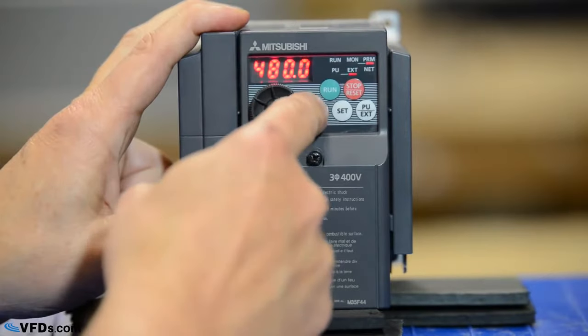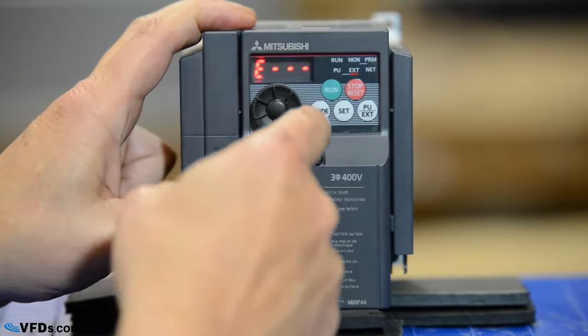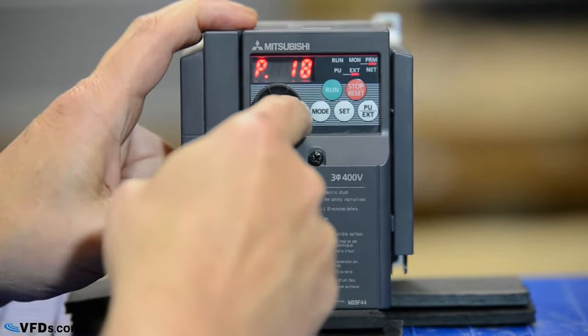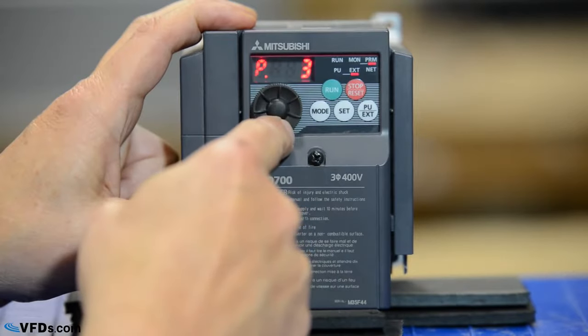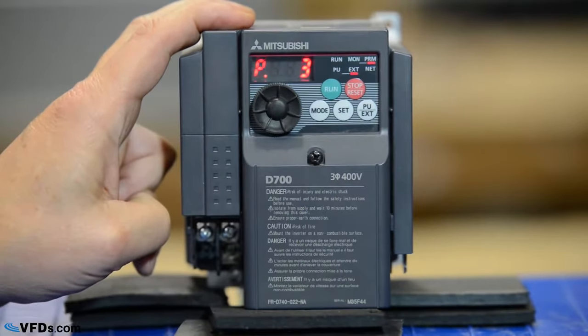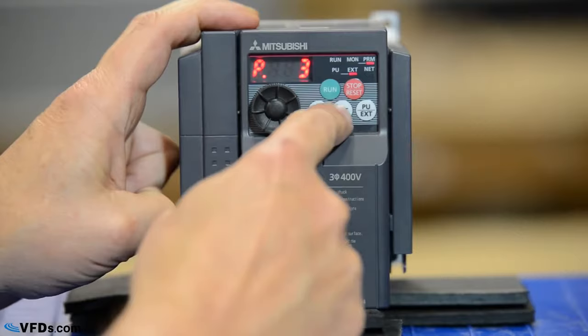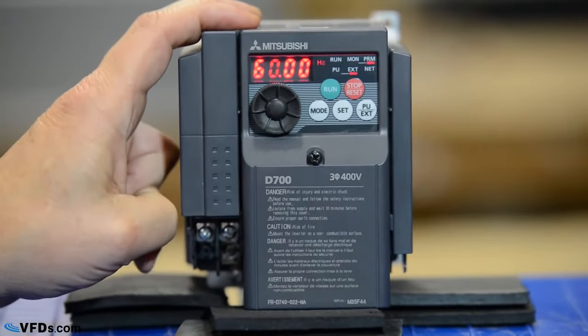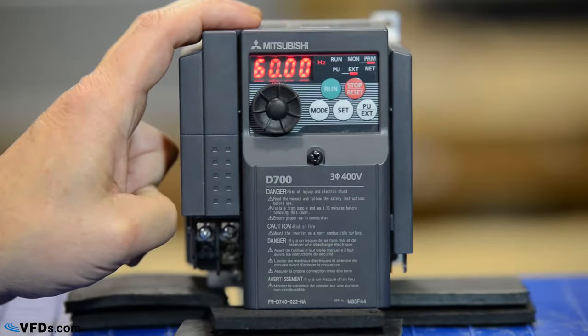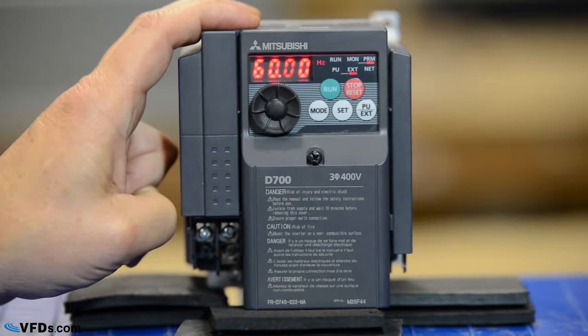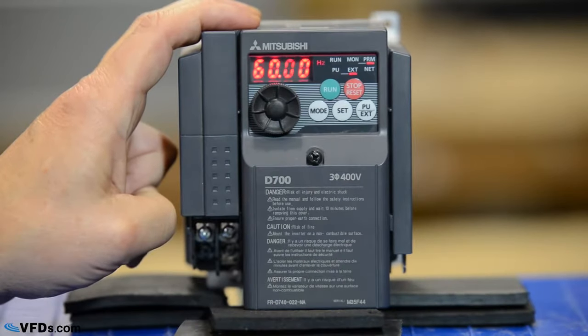Now let's go down to parameter 3. This is my motor rated frequency. I press set, it's set for 60 hertz. This is the way it should come out of the box, and that is my motor rated frequency, so I'm not going to change it.